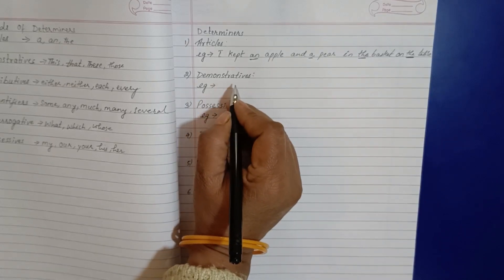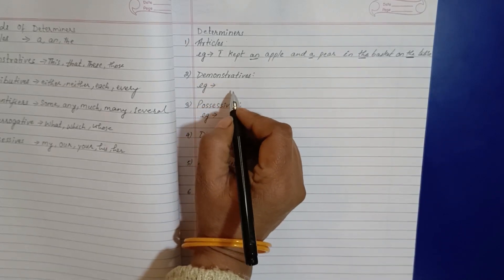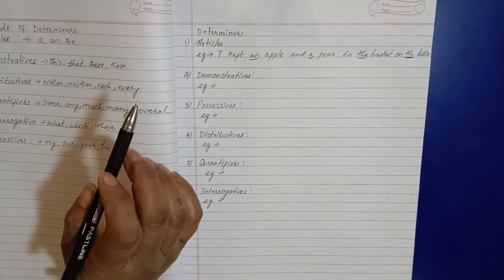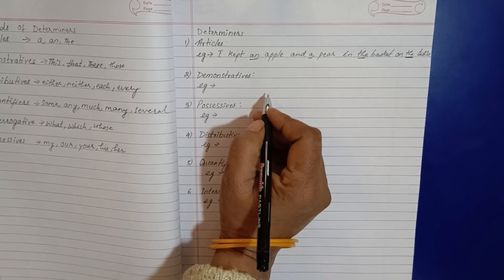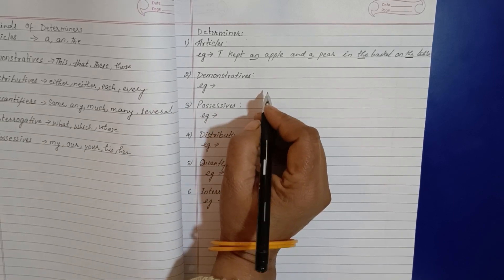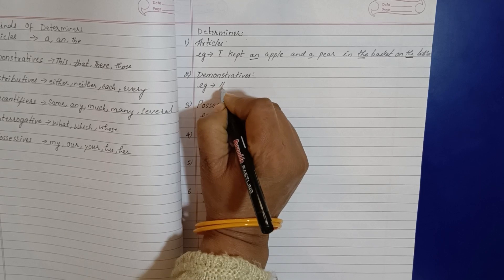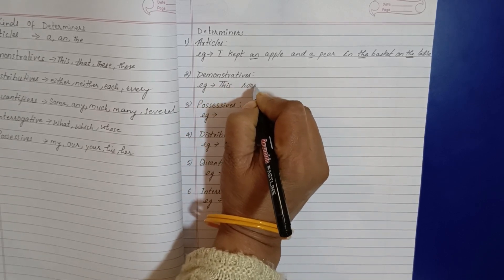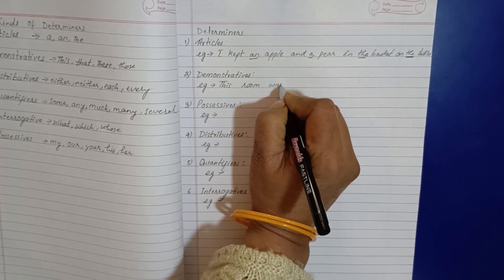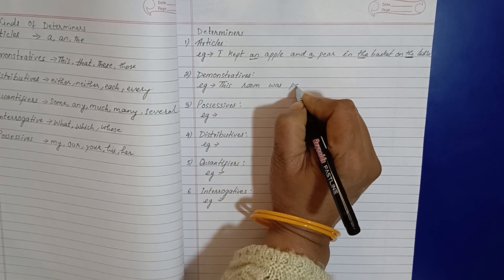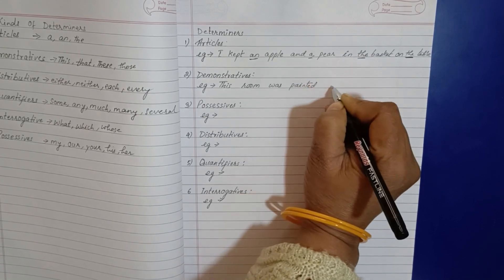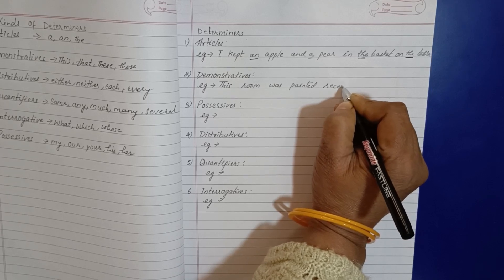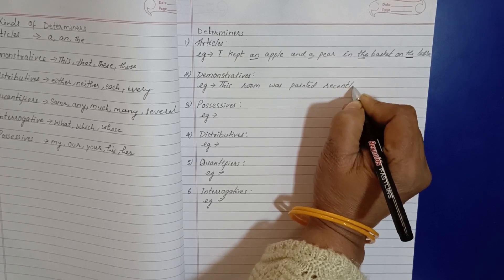Here we have demonstrative. So we have to use this one. What are we doing here? This, that, these, and those. So we will make a sentence. This room was painted recently.